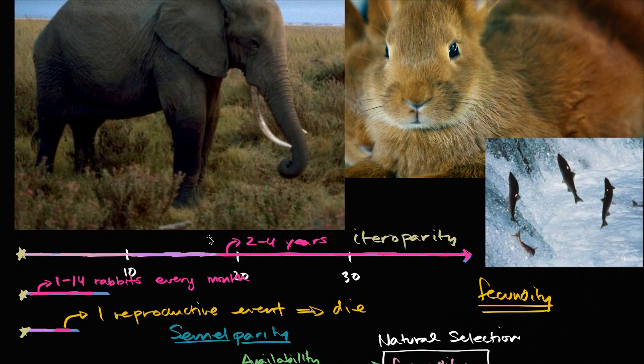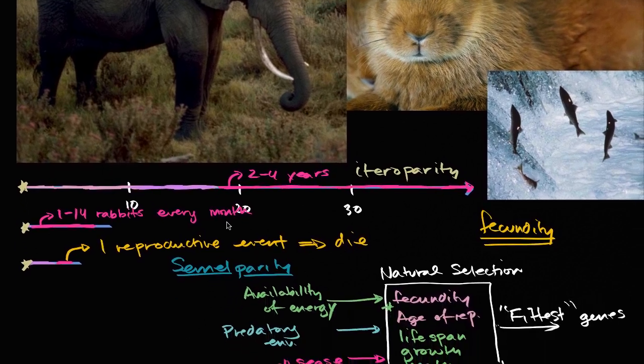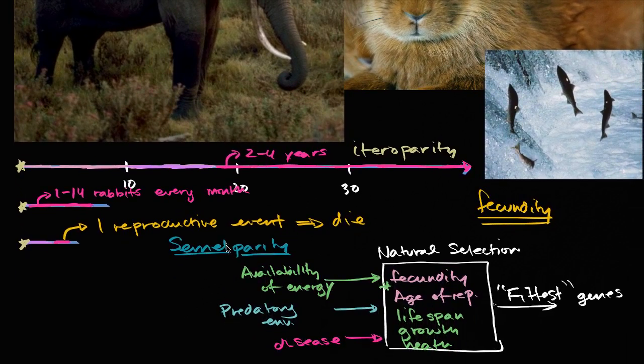So there's all sorts of interesting trade-offs to think about when you think about life history, life cycle, lifespan, and things like fecundity, and how organisms reproduce.